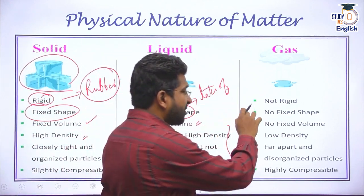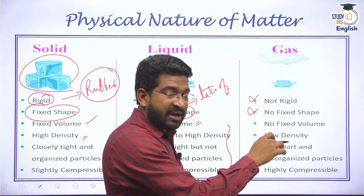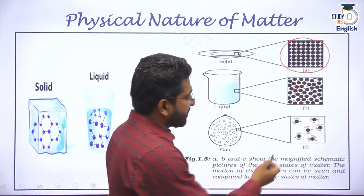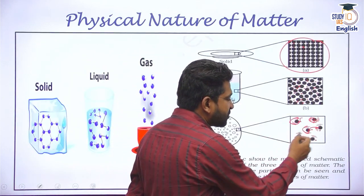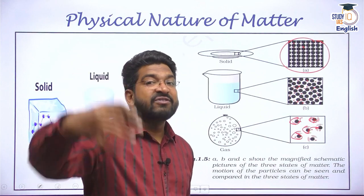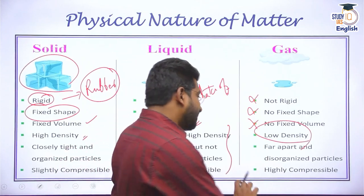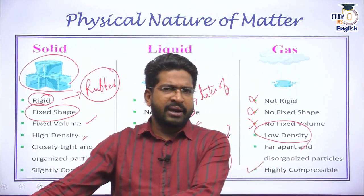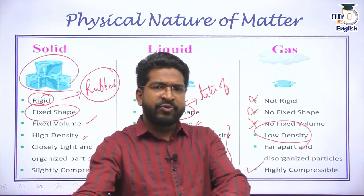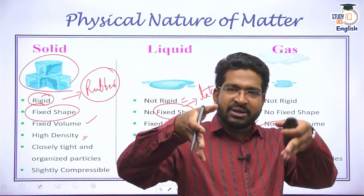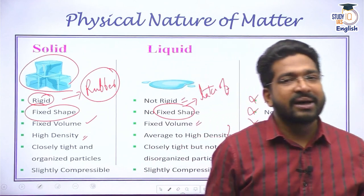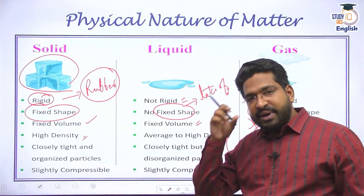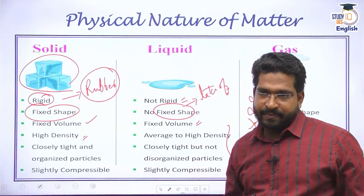Gas is not rigid. It does not have any fixed shape or fixed volume. Its density is very, very low, and the particles are far away from each other — that is why diffusion is very, very fast. Gas is highly compressible. For example, a gas cylinder at home has approximately 15 kg of LPG pumped into a small area. Solids, liquids, and gases are the three basic forms of matter.